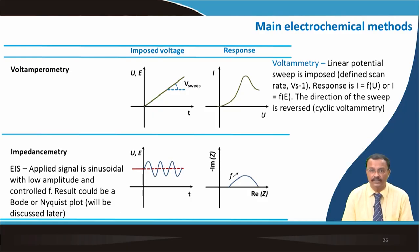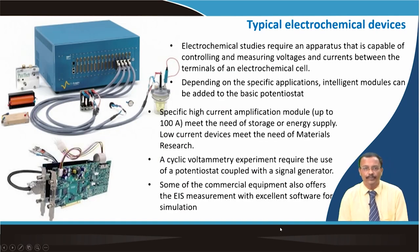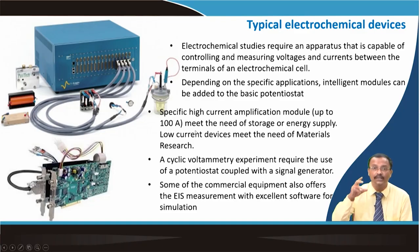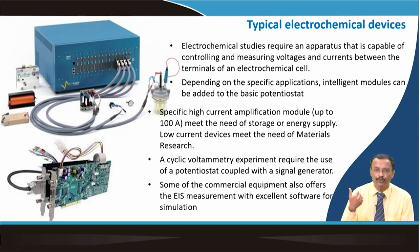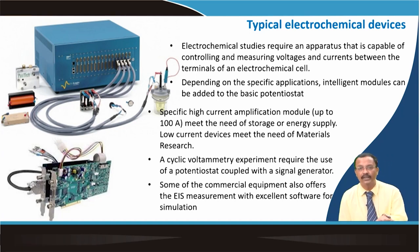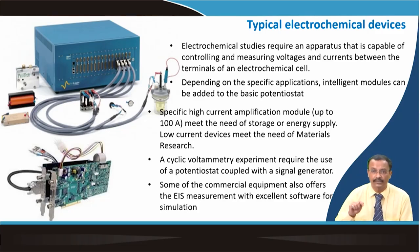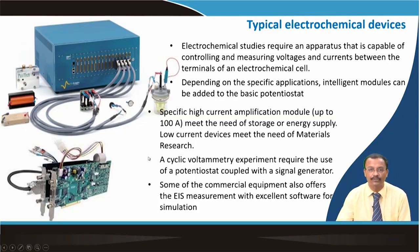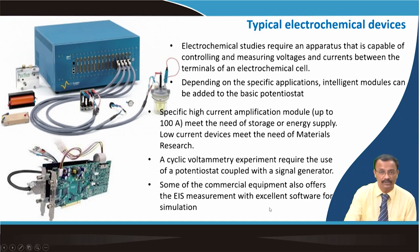Electrochemical impedance spectroscopy (EIS) applies a sinusoidal signal with low amplitude and controlled frequency; the result can be displayed as a Bode plot or a Nyquist plot. Typical electrochemical apparatus must control and measure voltage and current between the terminals of the cell. Depending on the application, modules can be added: high-current modules up to 100 amperes meet the needs of storage or energy supply, while low-current devices meet the needs of materials research. Cyclic voltammetry experiments require a potentiostat coupled with a signal generator; commercial equipment also offers EIS measurement with excellent simulation software.